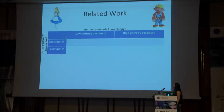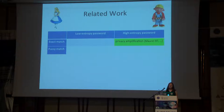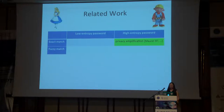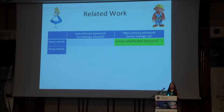The nicest cell in this table is the high-entropy exact match cell, where we have privacy amplification. We still need something because even though the passwords are high entropy and exact, they might not be uniformly distributed. These privacy amplification protocols are very efficient, but they pay for this efficiency by having some leakage about the password. In the high-entropy situation that's totally fine, but because we have some leakage we can't directly apply these techniques to the low-entropy setting.